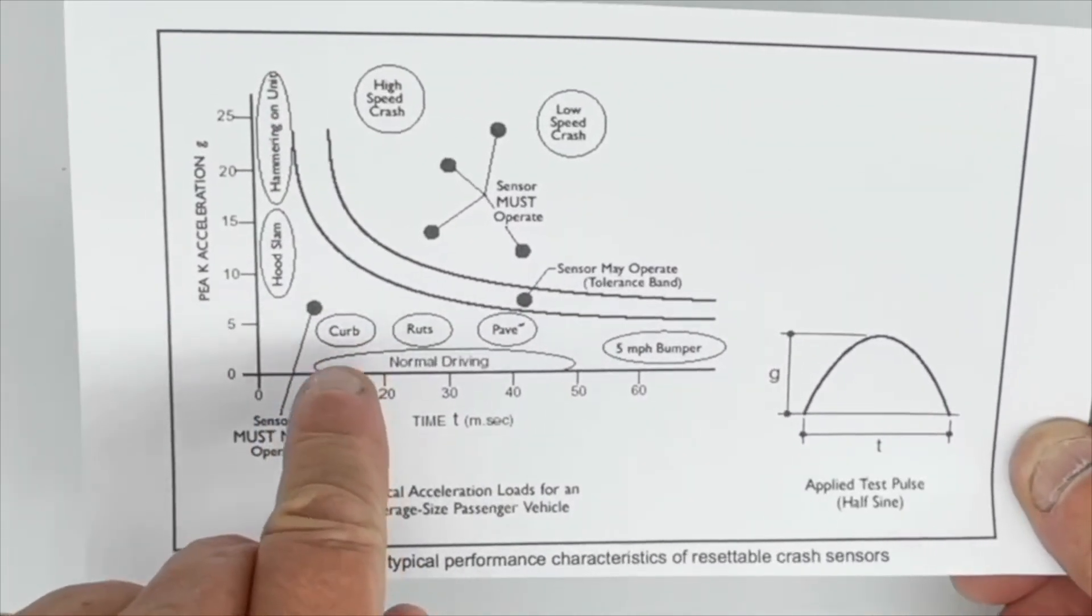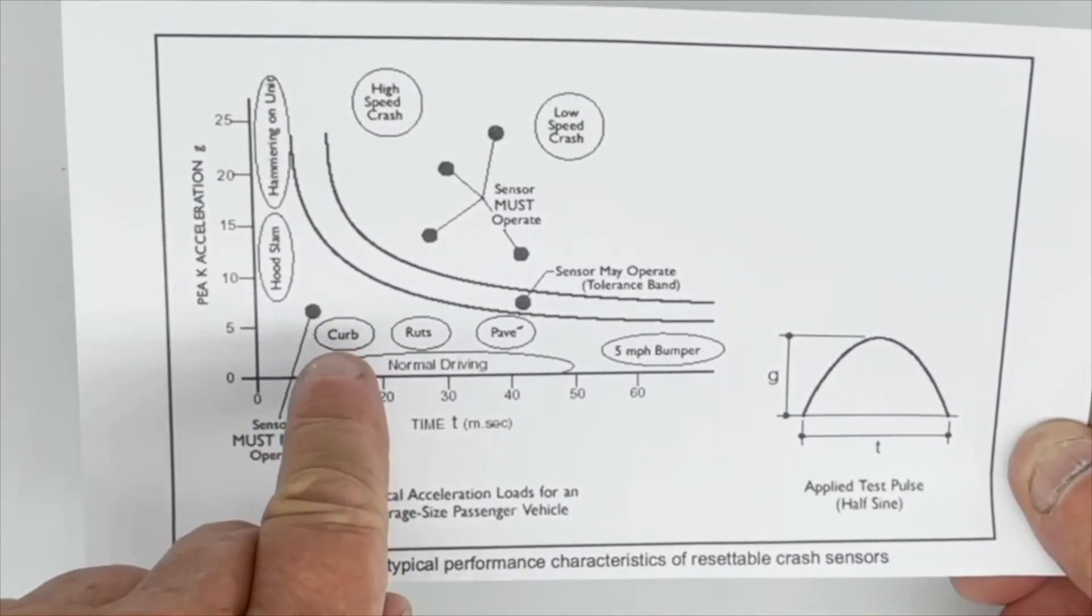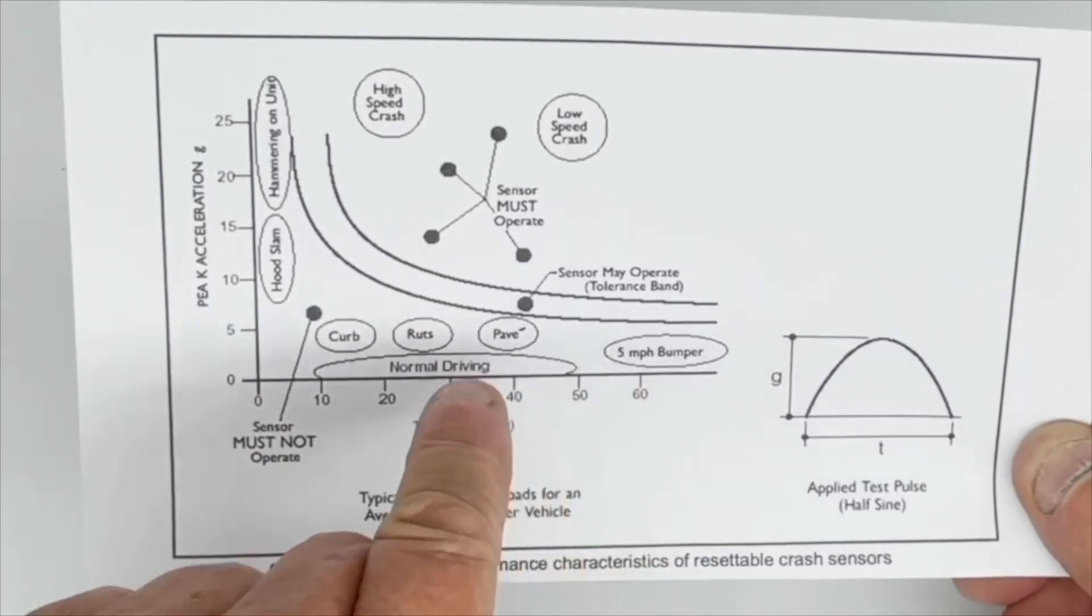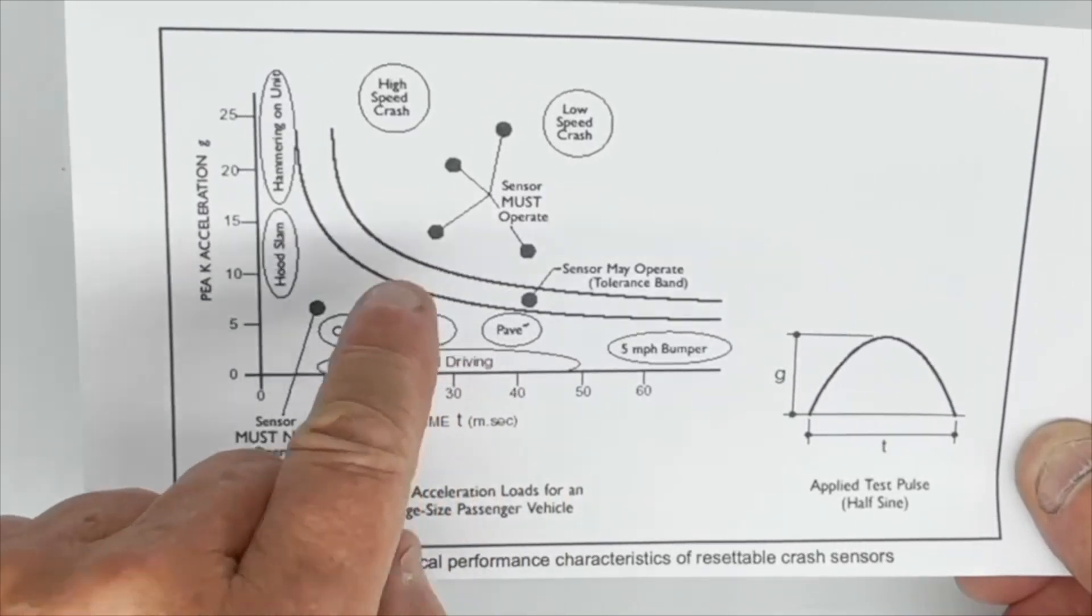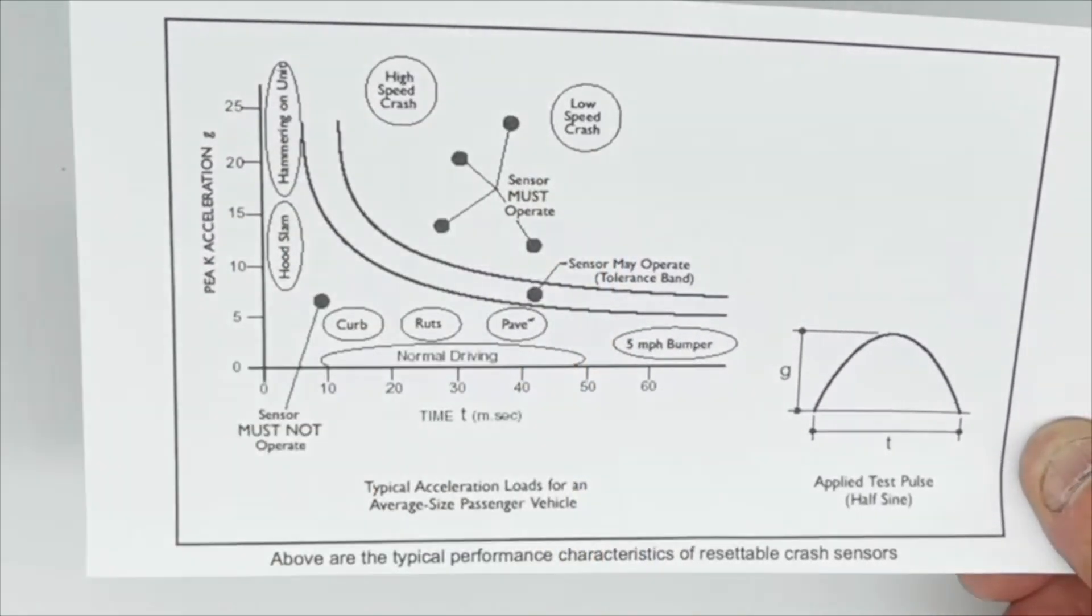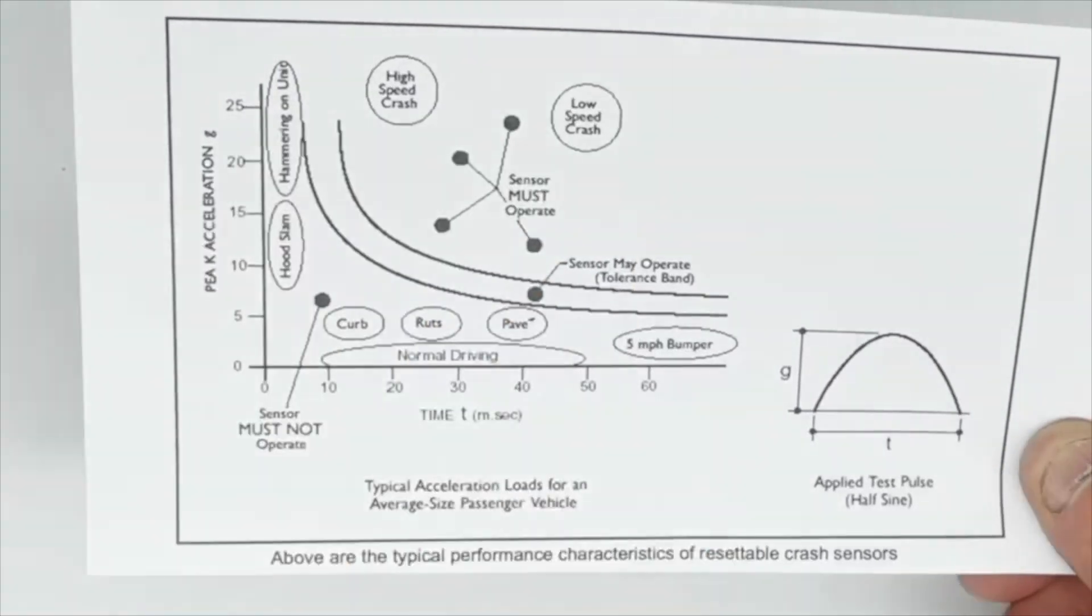On the outside of the curve you can see an impact with a curb or a road rut or a pavement, which is outside the operating criteria of the switch. Inside the curve is a high speed crash or a low speed crash which will trip.